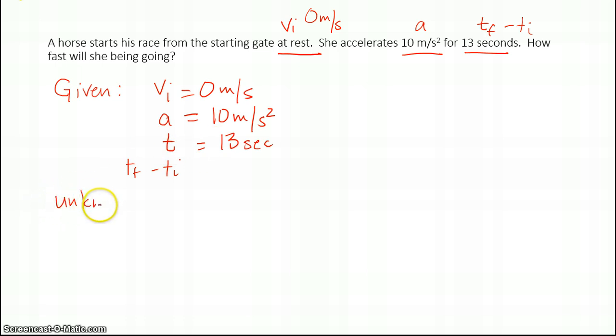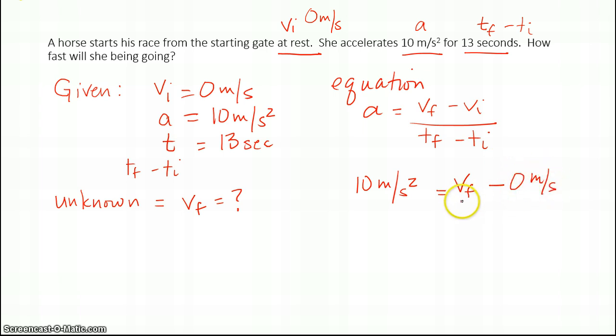Now my unknown, what I'm trying to find, is my final velocity. I'm looking for Vf. That's my unknown. The equation that I want to use in this one—I have acceleration, I have Vi, I have T and Vf—I think the best acceleration that uses most of the variables is my Vf minus Vi over Tf minus Ti. Now I just plug in my numbers. I know A is 10 meters per second squared. I am looking for Vf, so I keep that as my unknown. Vi is zero meters per second. And all of this takes place in 13 seconds.